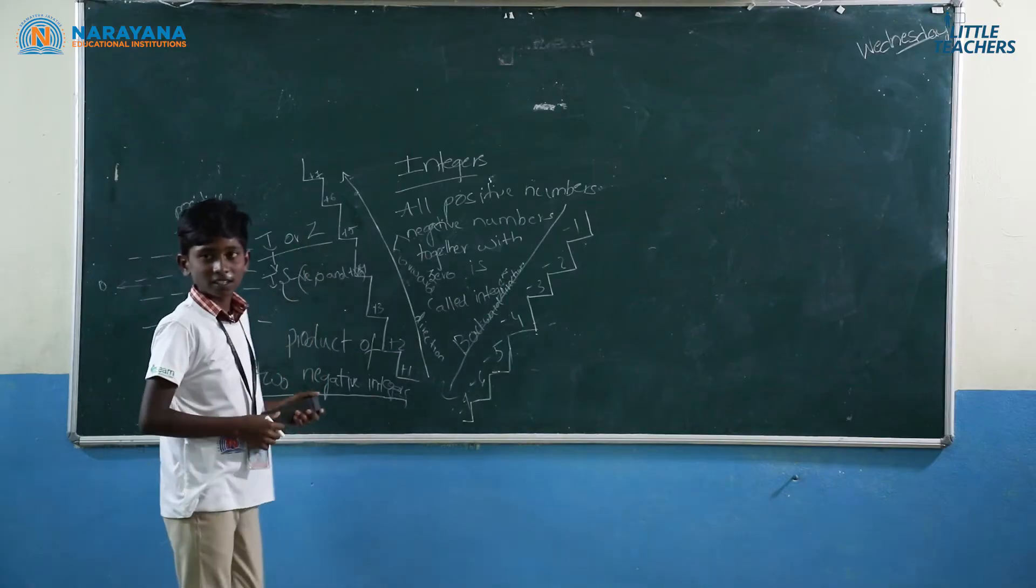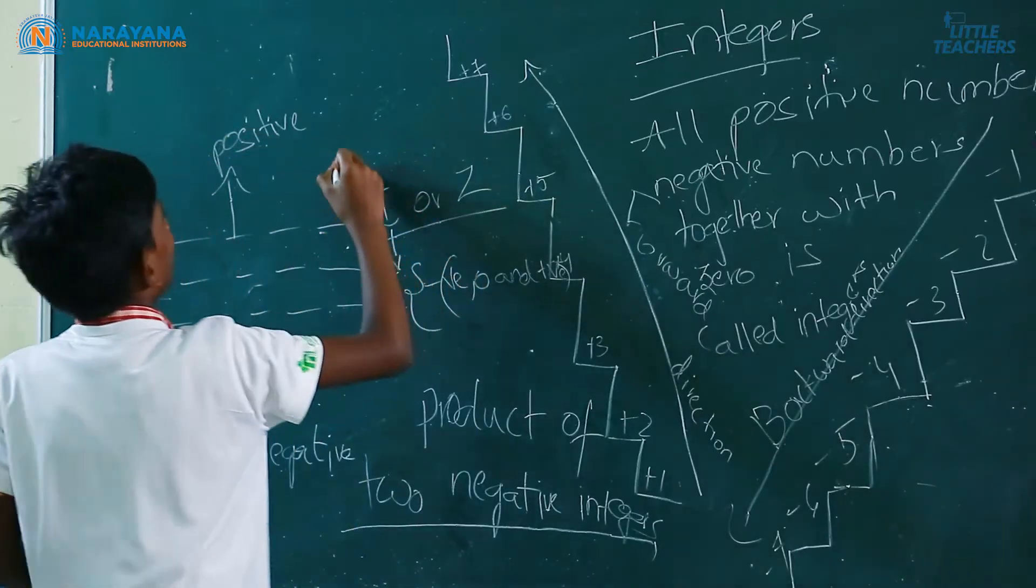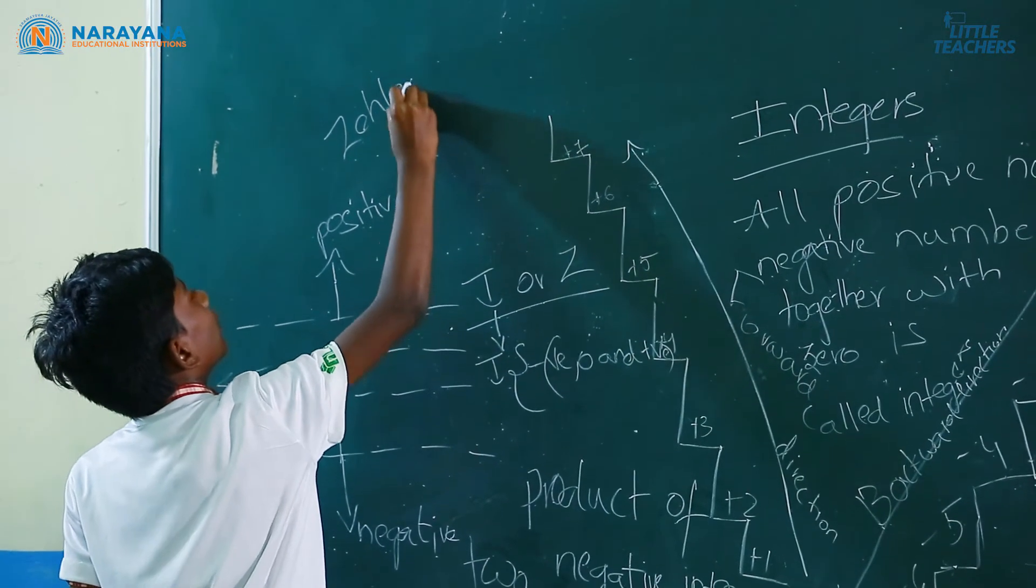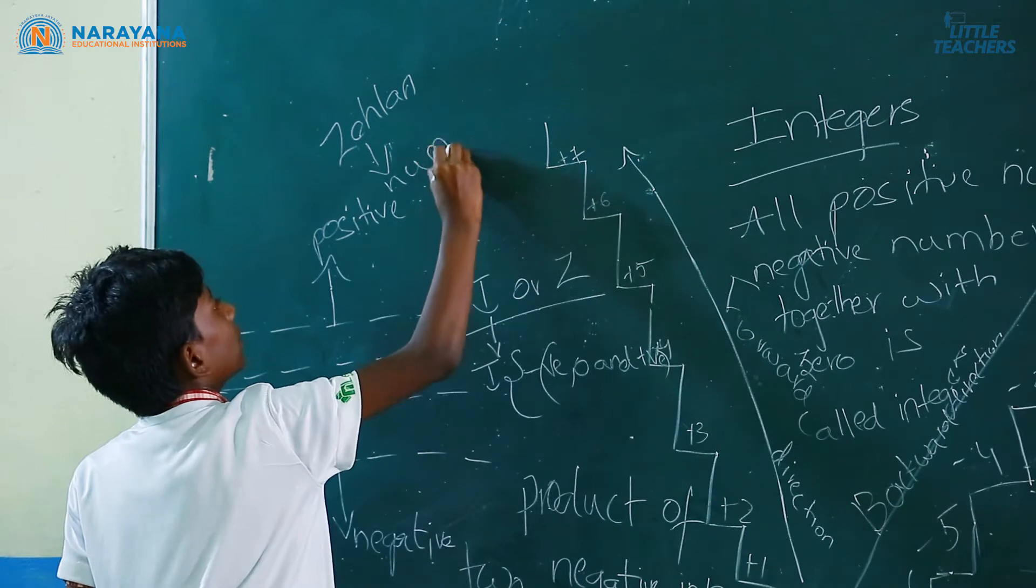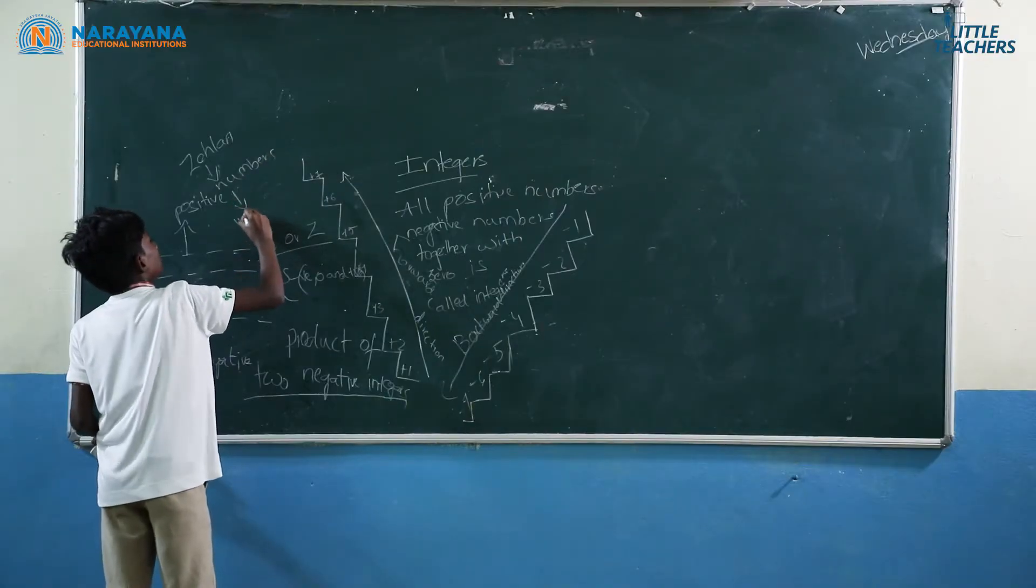What do you mean by z? The meaning of z is zahlen. The meaning of zahlen is numbers in German language.